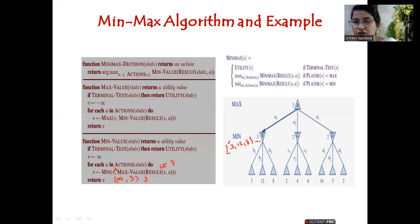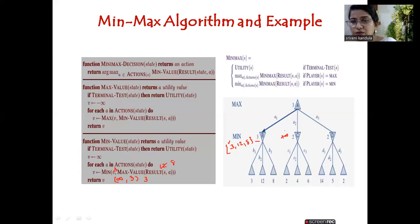Similarly at C: C has three actions C1, C2, and C3. Starting from plus infinity, infinity is compared with 2 — 2 is minimum so it updates to 2. Then 2 is compared with 2 — 2 is minimum — so the value at C becomes 2. Similarly at D, among 14, 5, and 2, the minimum is 2, so 2 is selected.